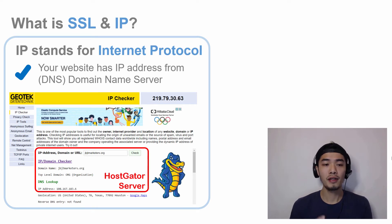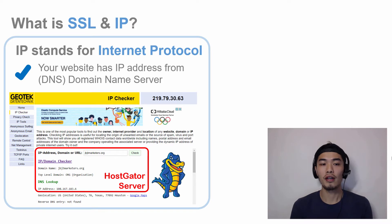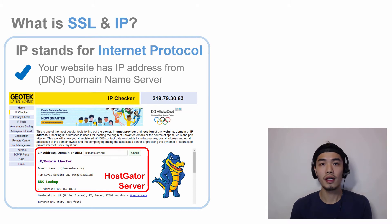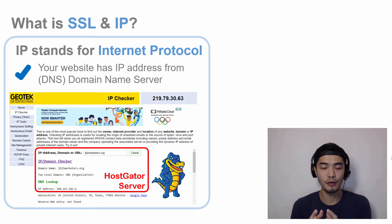To give you an example, my domain name is jbjtmarketers.org. If you go to one of the IP checkers on the internet, they can show you the IP address. This IP address is from my HostGator server, which has its own DNS. Some web host providers offer an all-in-one package where they provide both web hosting and a domain name server.